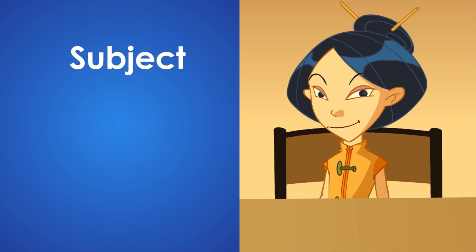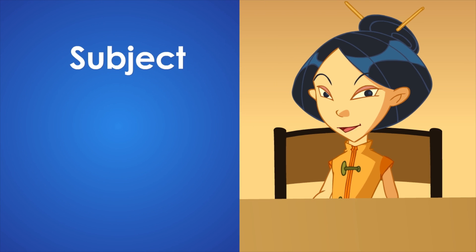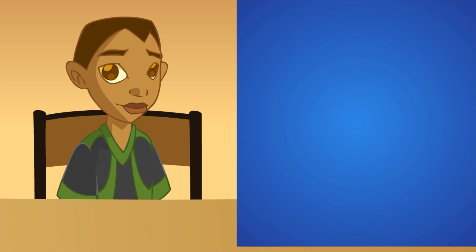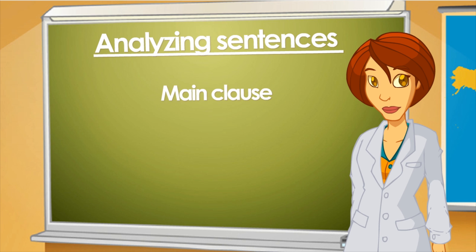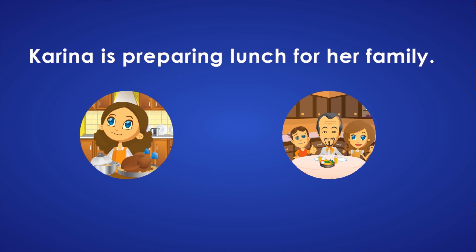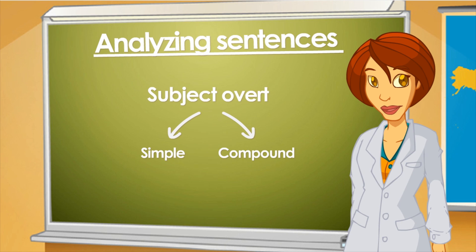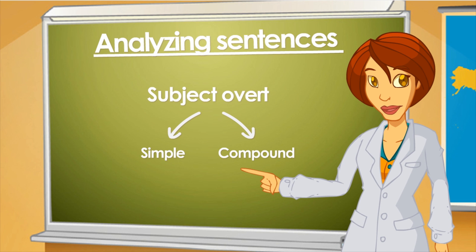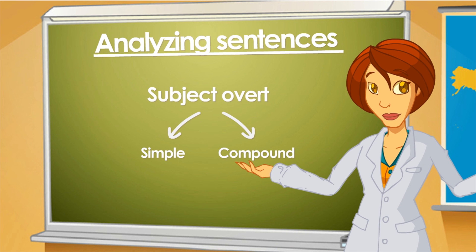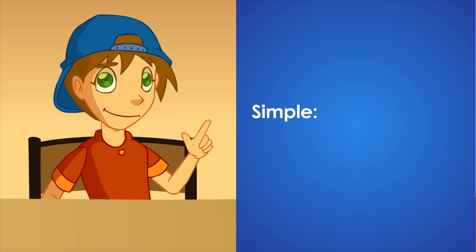The subject is the part of the clause which represents the doer or origin of an action — a person, an object, or an animal. If I say, 'Karina is preparing lunch for her family,' what's the subject in this clause? Karina. Very good! The subject is overt because it is present in the clause. Is it simple or compound? Simple, as it's got only one noun phrase.